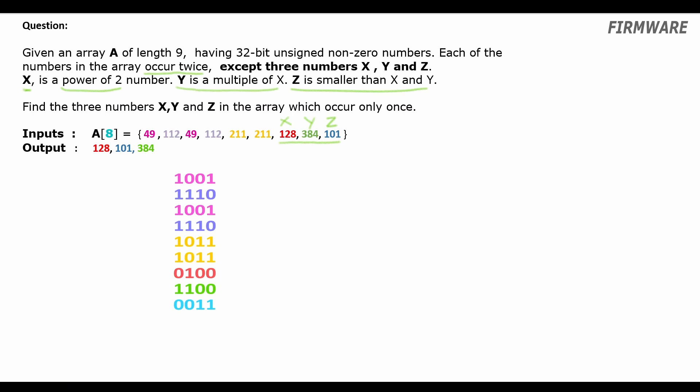Alright, let's revise some basic concepts we had learned in our previous episodes. First, any power of two number will have only one set bit in its binary form. So, a number X which is a power of two number will look something like 00100 with only one set bit in the position j. Second, any number Y which is a multiple of X where X is a power of two number with set bit in position j, will have set bits only in position j or to the left of j.